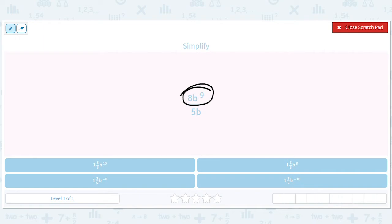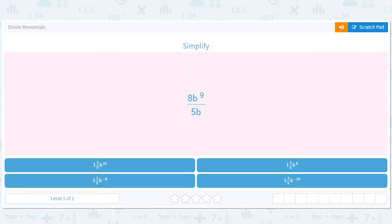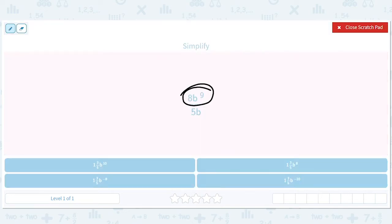So 8b to the 9. So we're dividing one over the other. We basically separate out the numbers, try to simplify them. In this case, we can't. 8 over 5.